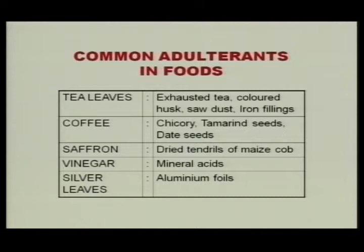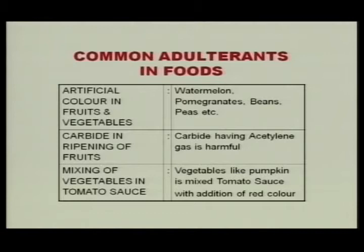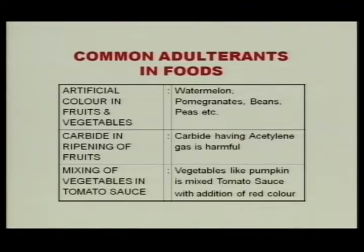Artificial color is added in fruits and vegetables. Many fruits like watermelon or pomegranate have red color injected into them. In case of green vegetables like beans, peas, or okra, green color is added — you can see in the market that many vegetables are colored with artificial color, which is harmful. Calcium carbide is used for ripening of many fruits. Calcium carbide contains acetylene which is harmful. Fruits like mango and banana are ripened with calcium carbide.